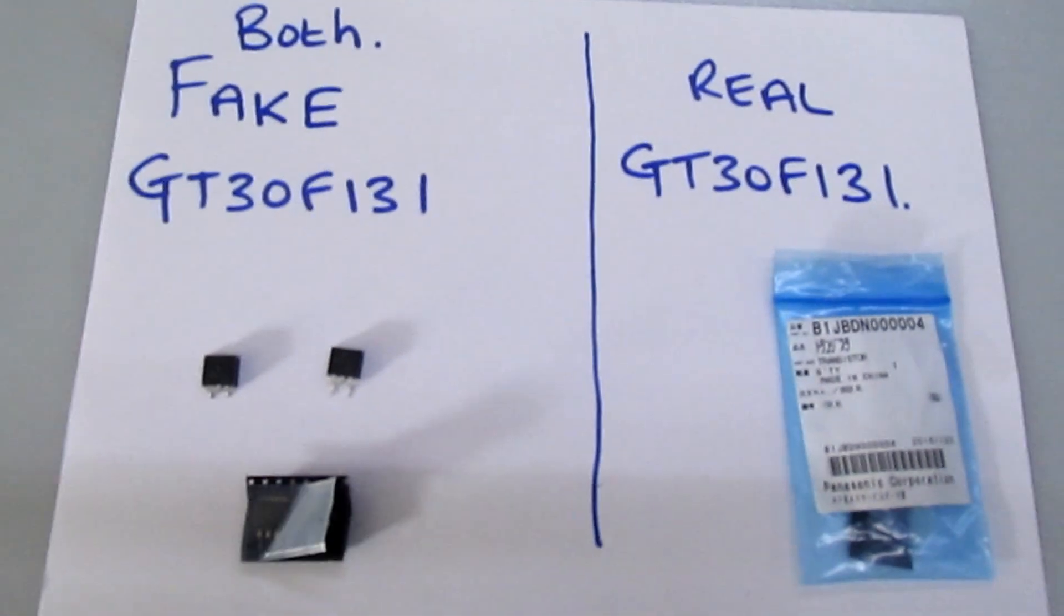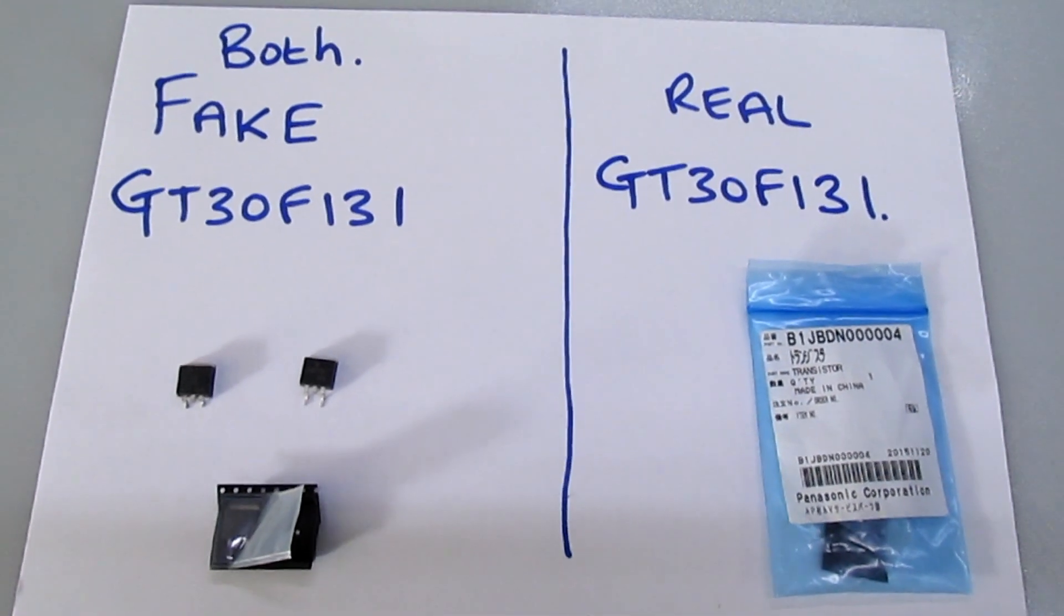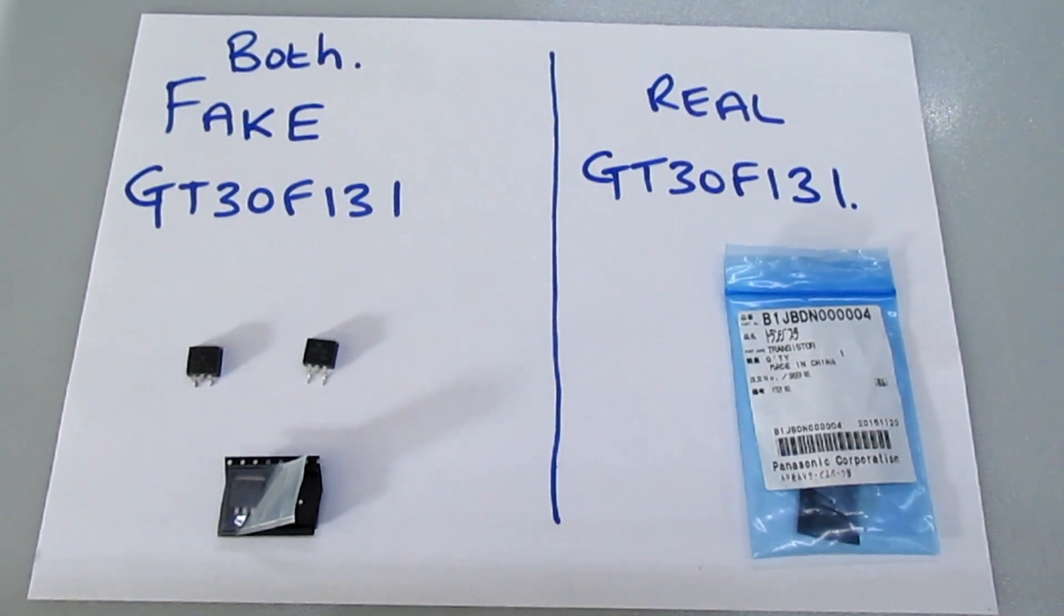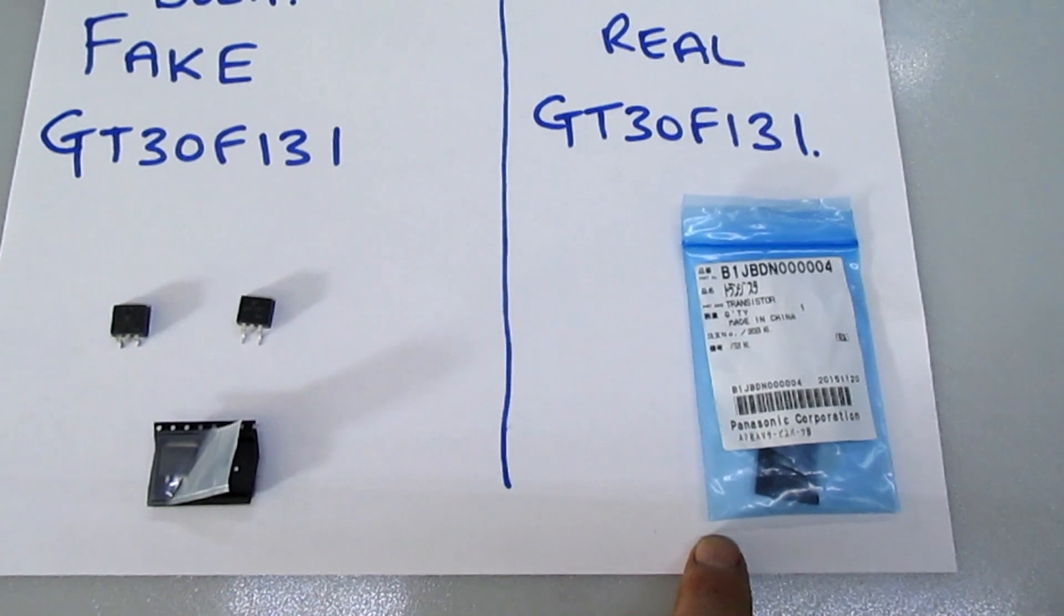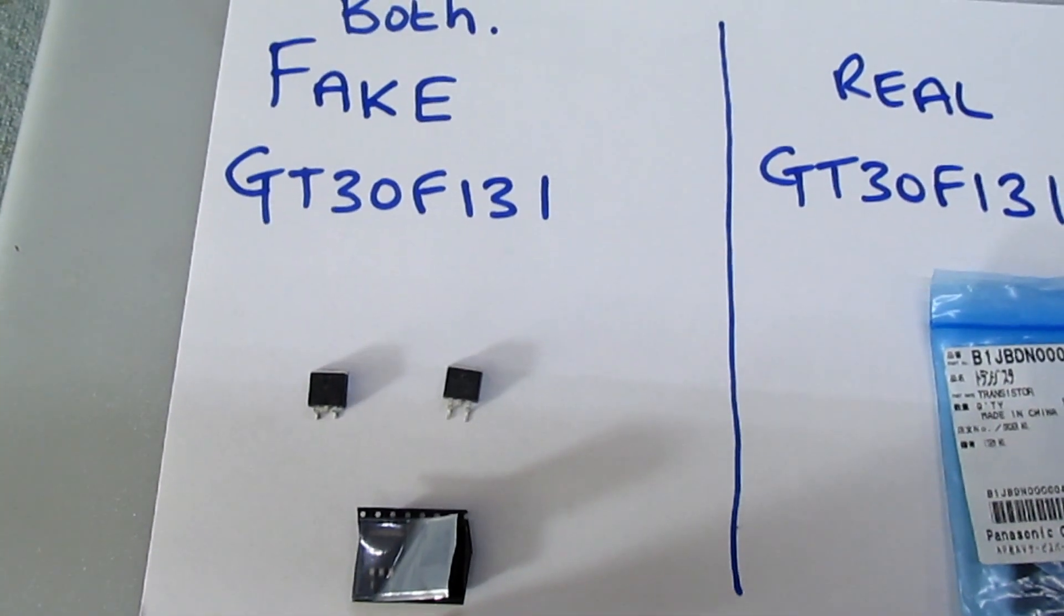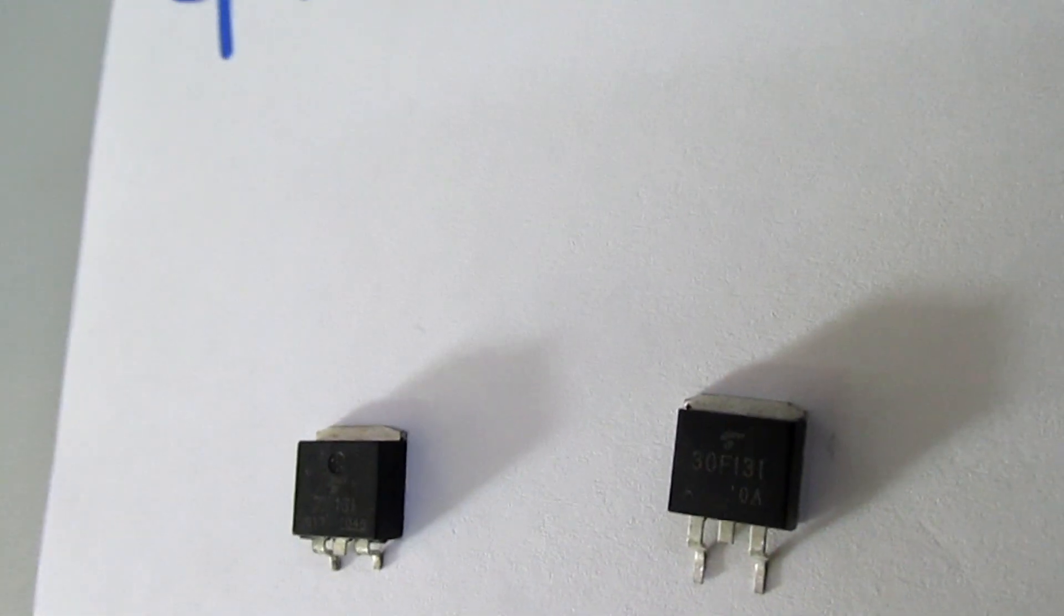Moving over to the next part of the video, we've got a Toshiba IGBT, GT30F131. On this side we've got the real one, on that side there's actually two fake ones. You can't see them well on camera, it's going to be difficult to zoom in, but I'll have a go.